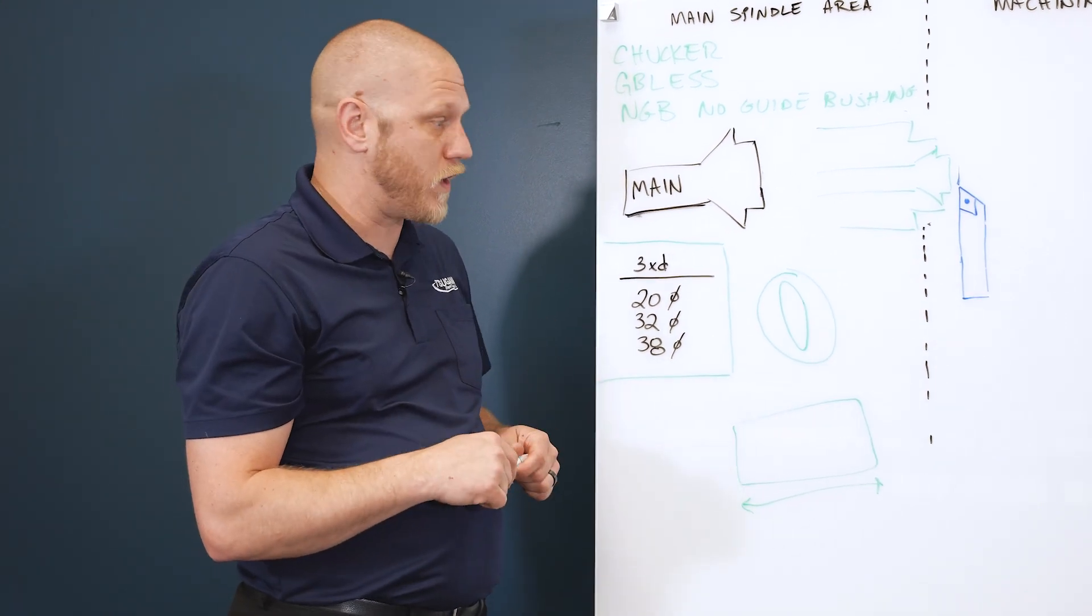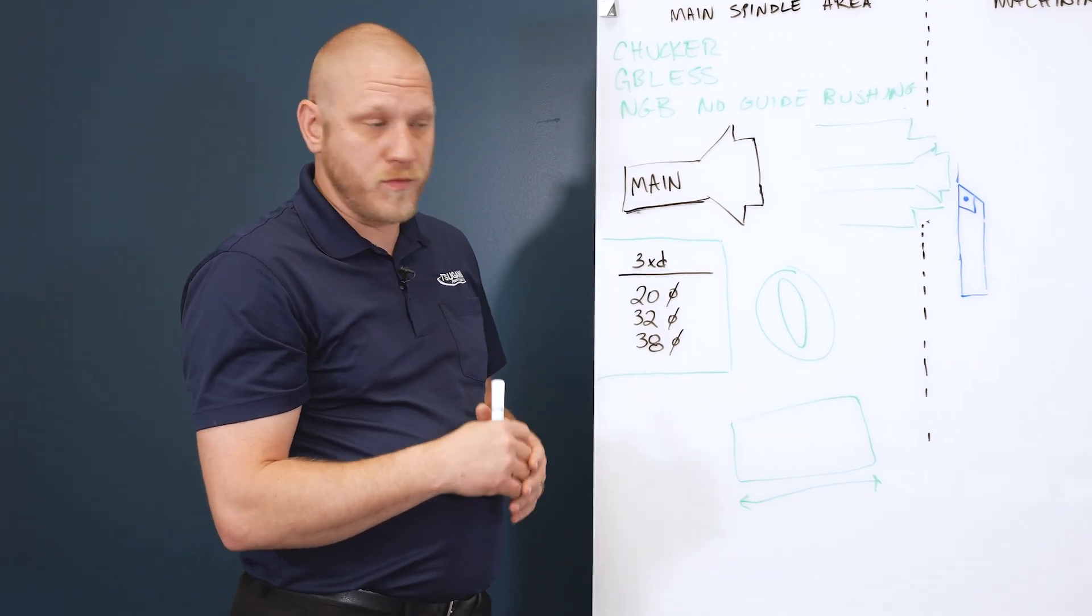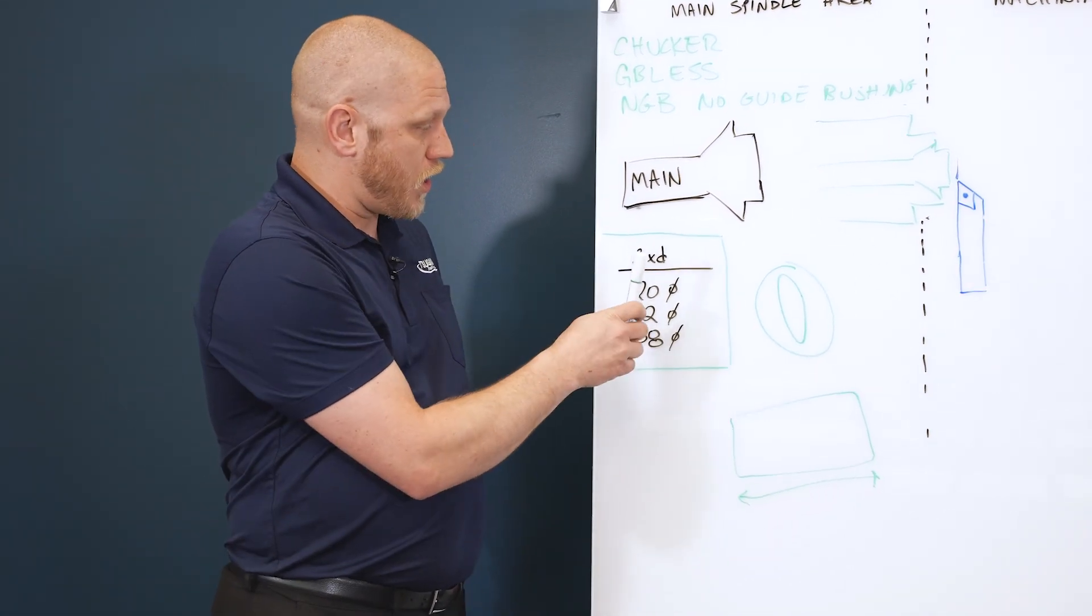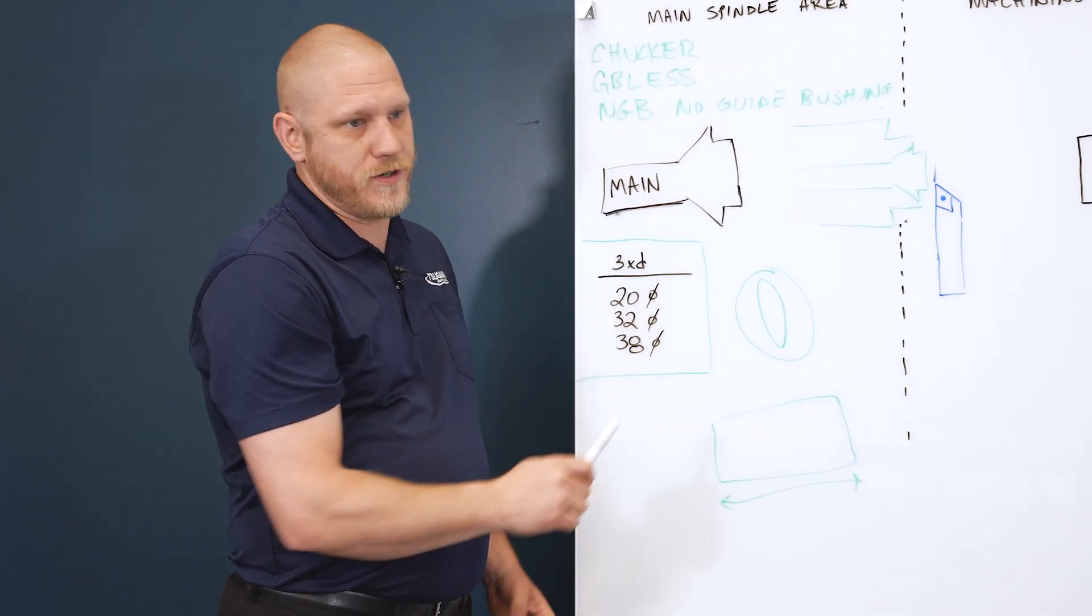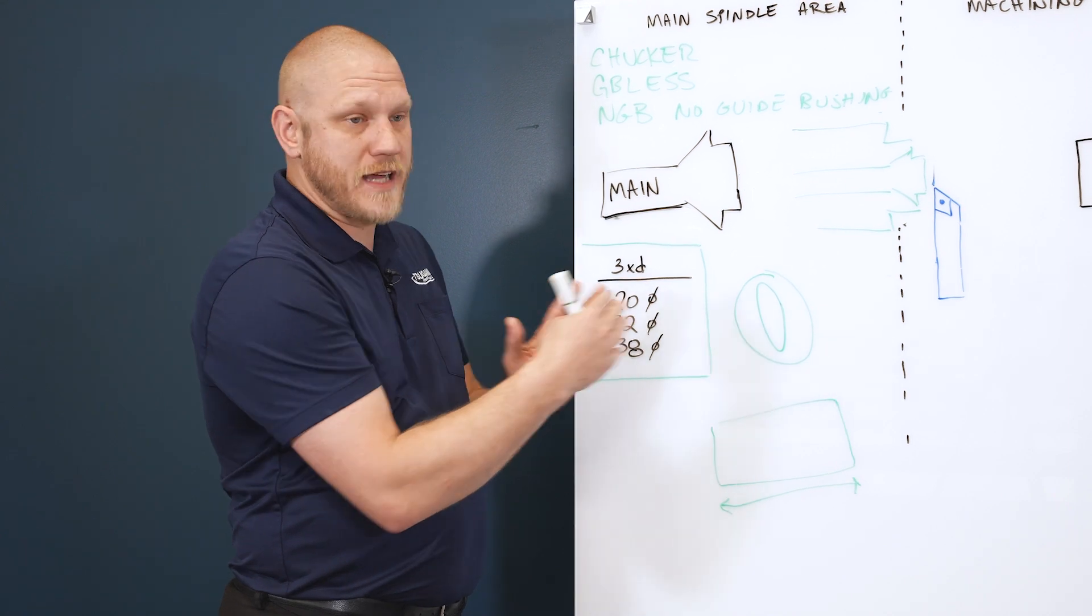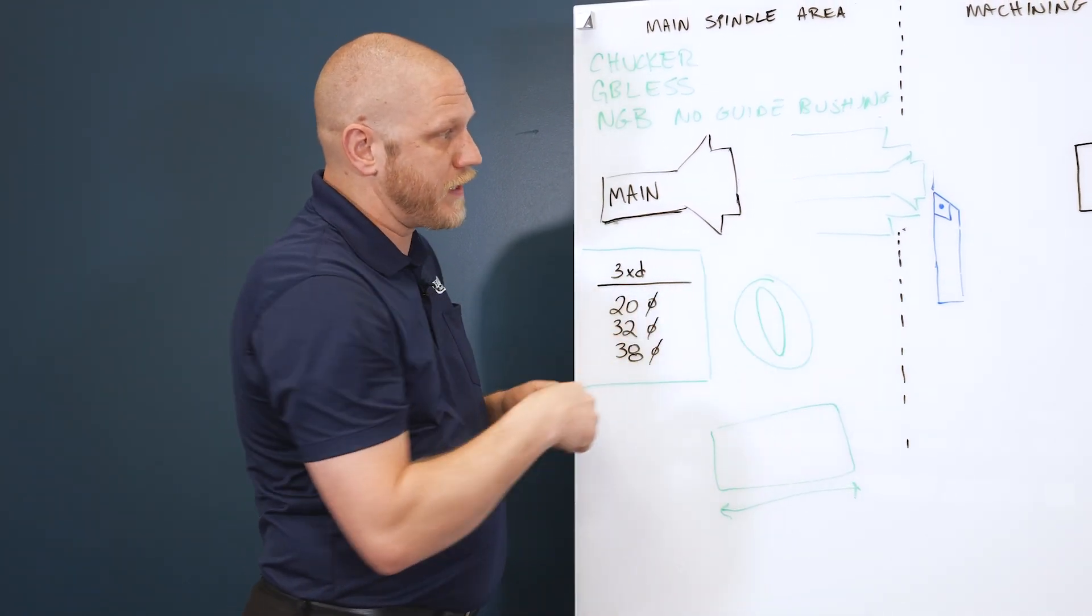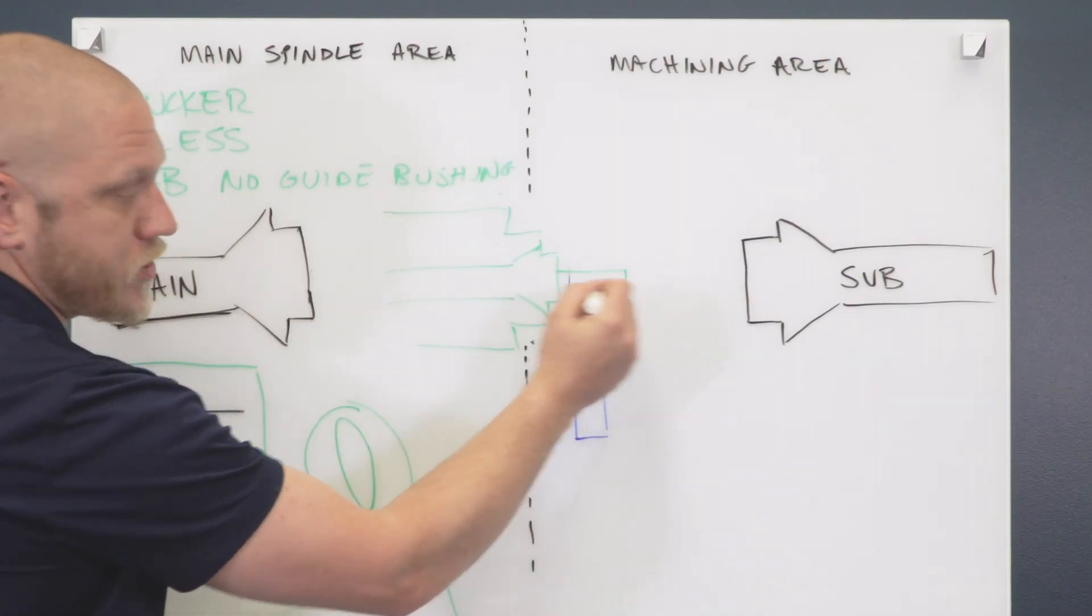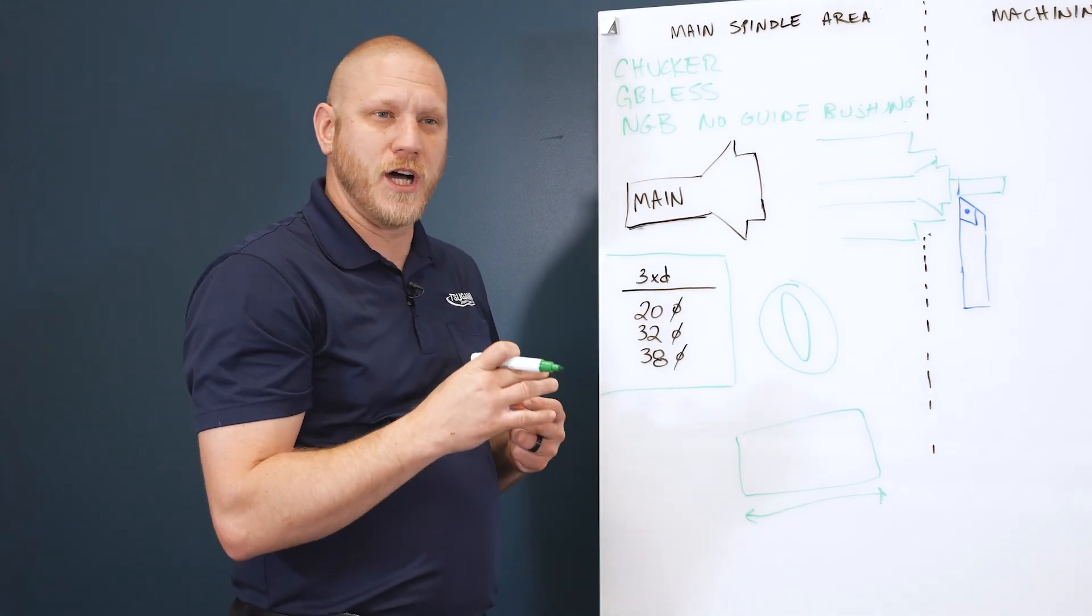With chukar mode, we have to go back to the three times D rule—three times diameter. Maximum diameter of most Swiss machines you're usually 12, 20, 32, 38. Based on the diameter of your part, you are limited to how far you can actually protrude out of that collet, because now your material is sticking out here unsupported like a conventional lathe. You've lost your support, the guide bushing, by going into chukar mode. So you have to always calculate: is this part a chukar-worthy part or should I run this in Swiss mode?